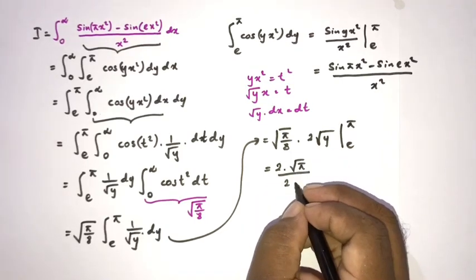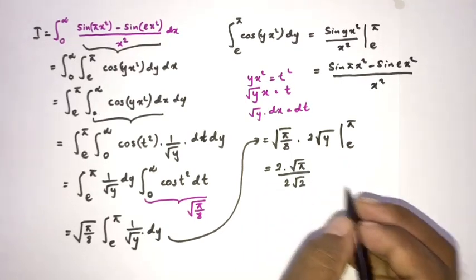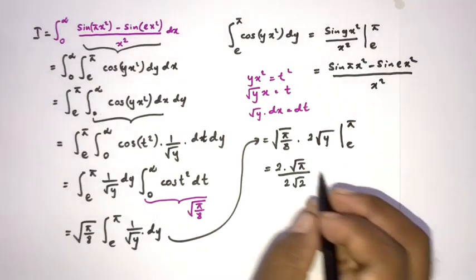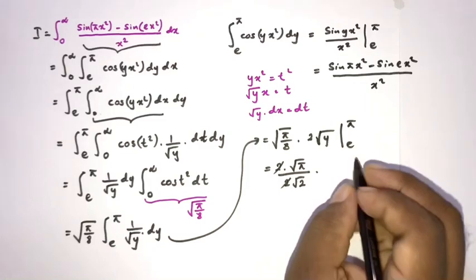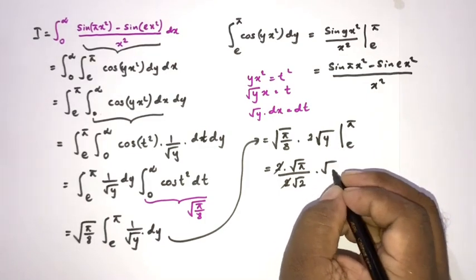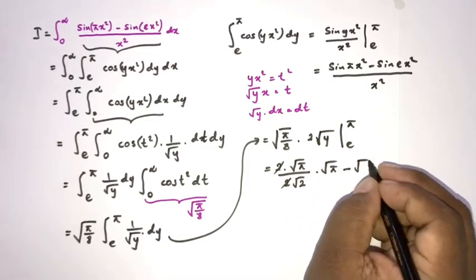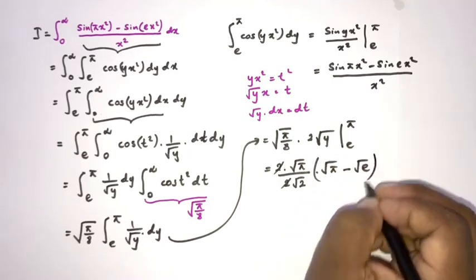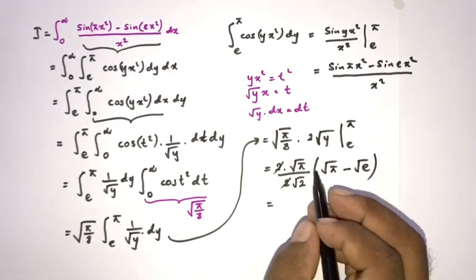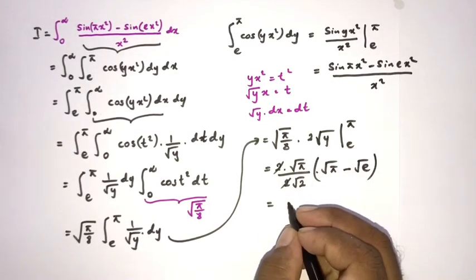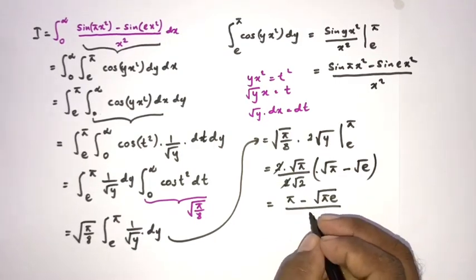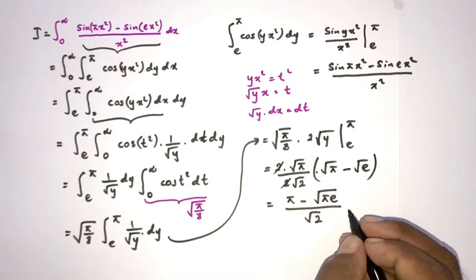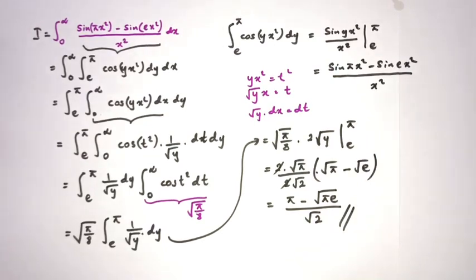We can write two times the square root of pi over 8, which gives two times the square root of pi minus two times the square root of e, with the two's cancelling. We then simplify to get: pi minus the square root of pi times e, all over the square root of two. This is the final answer.